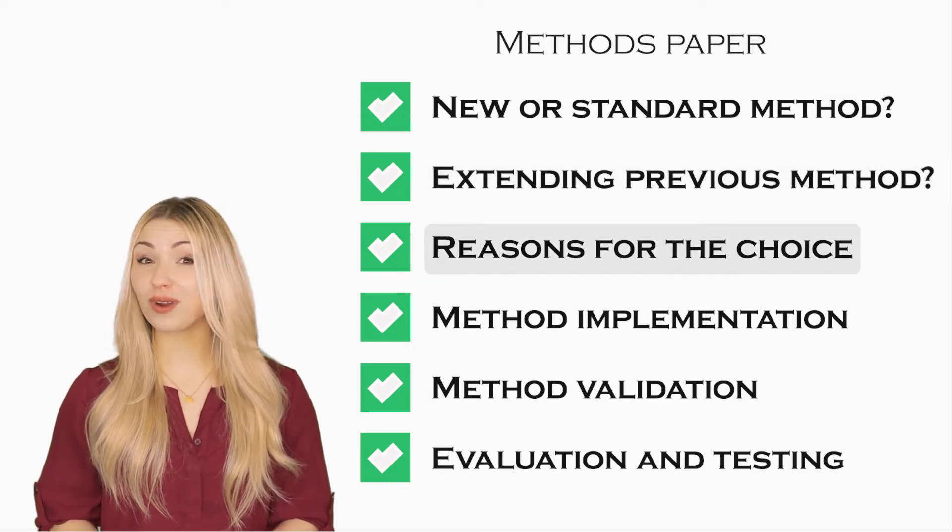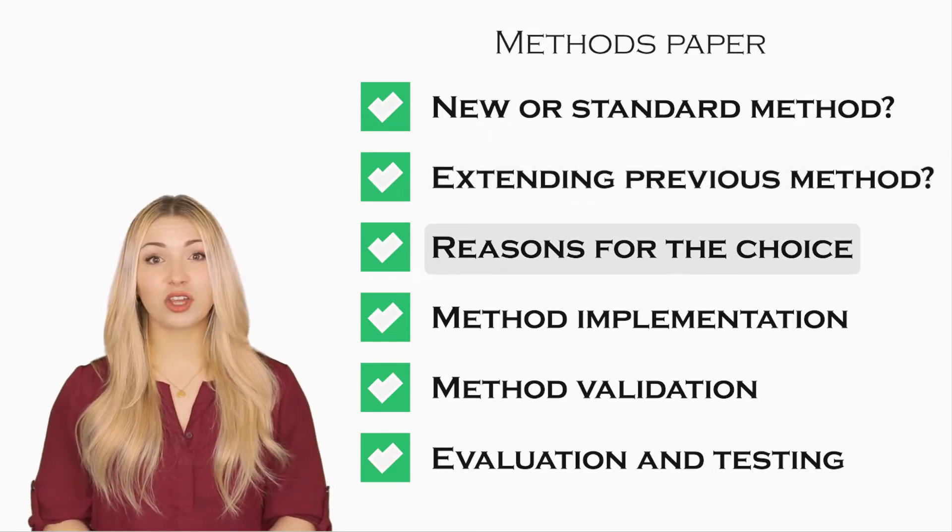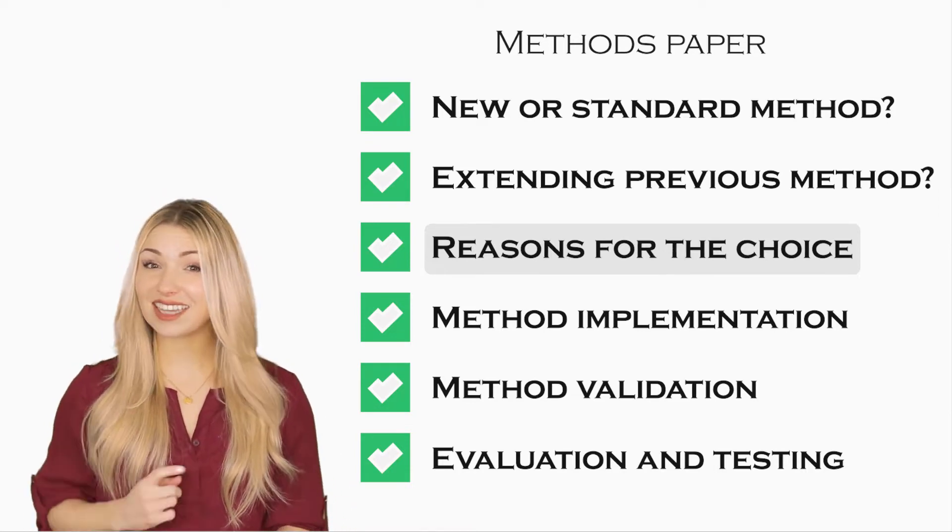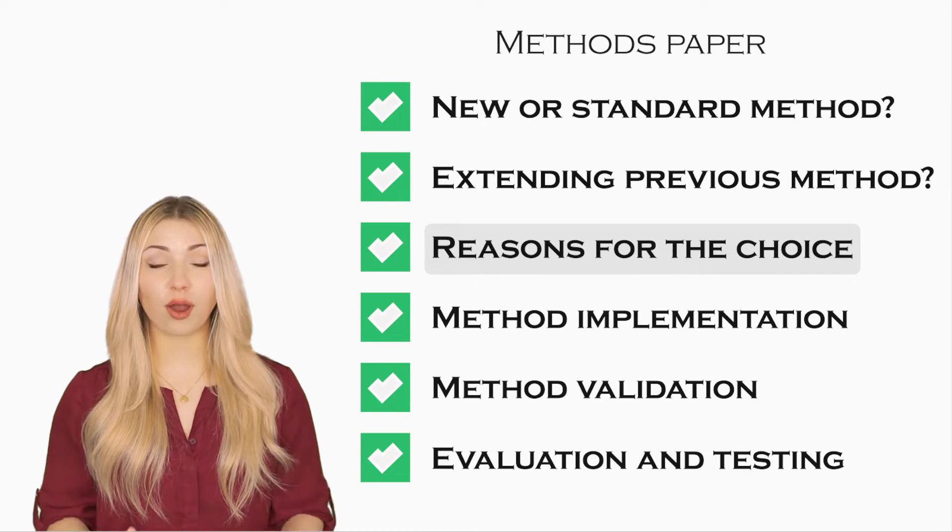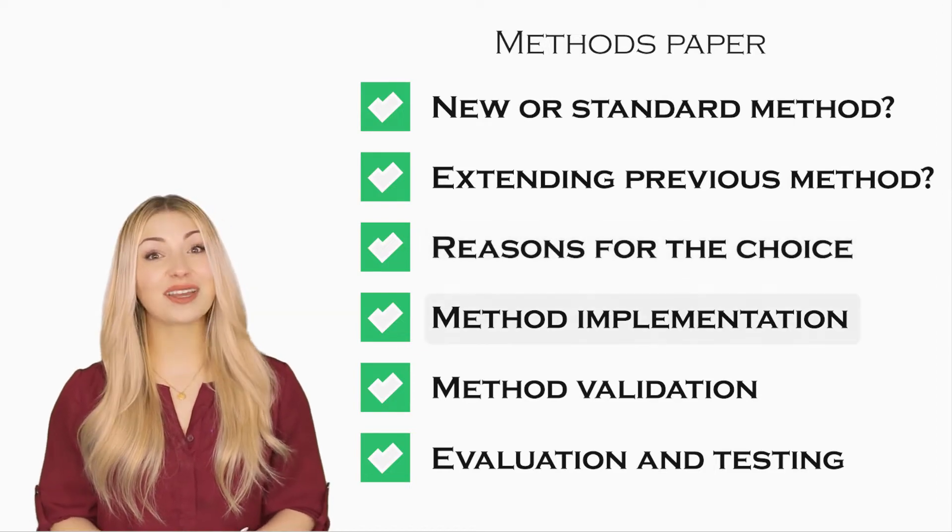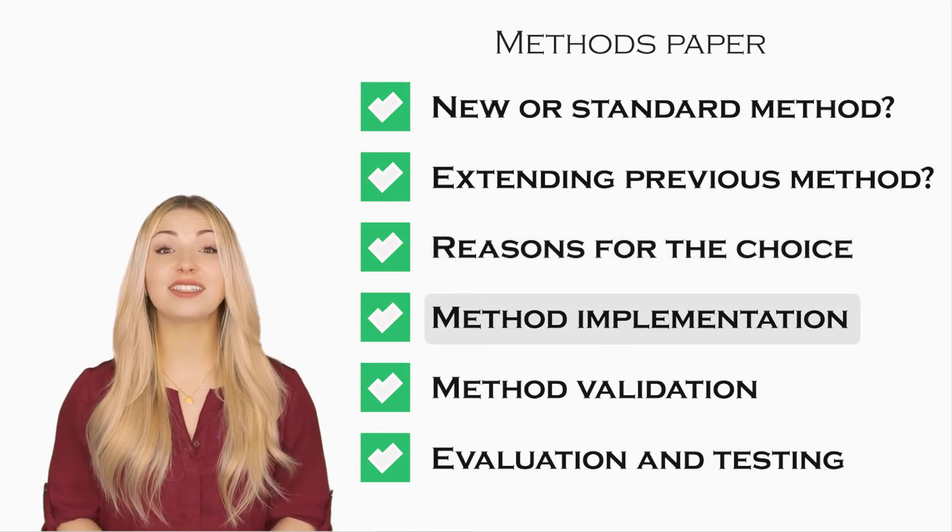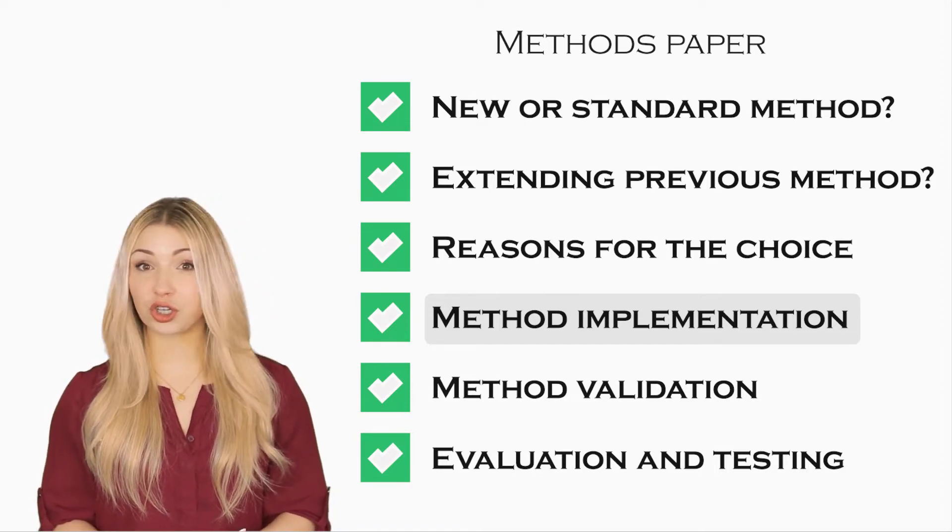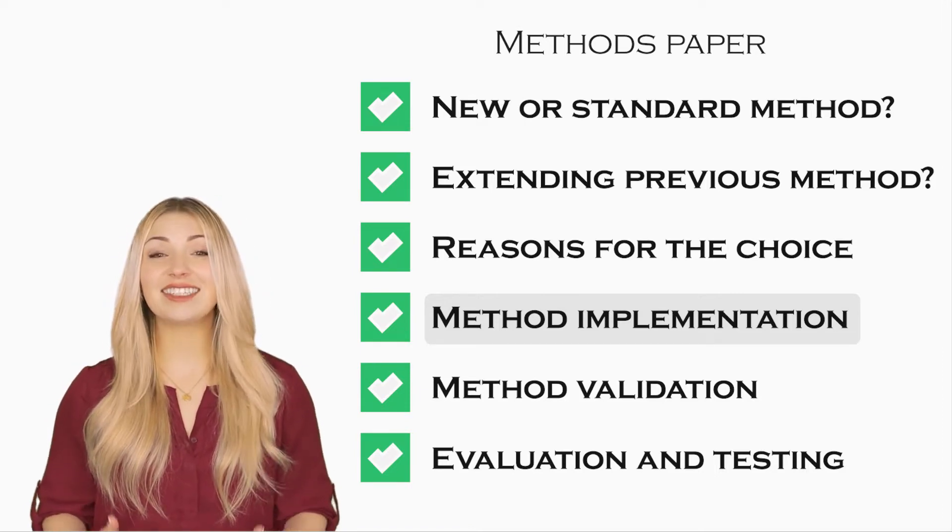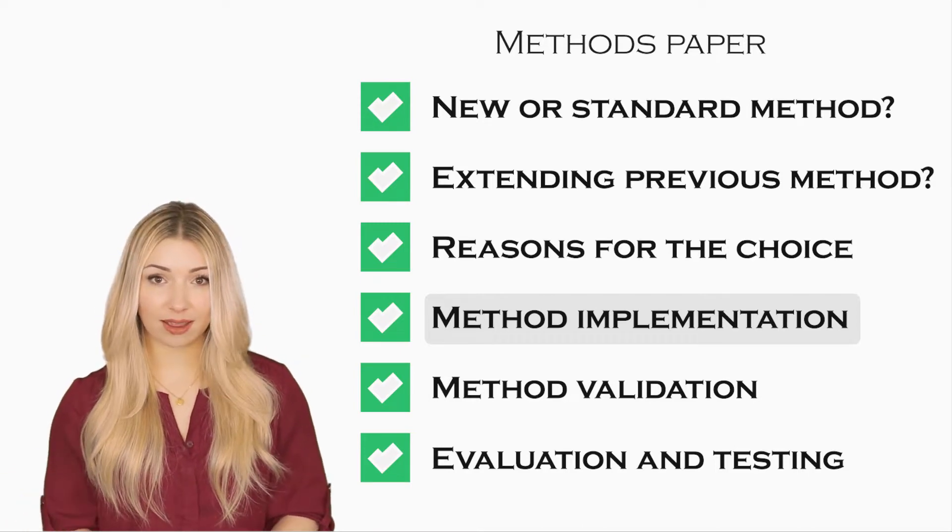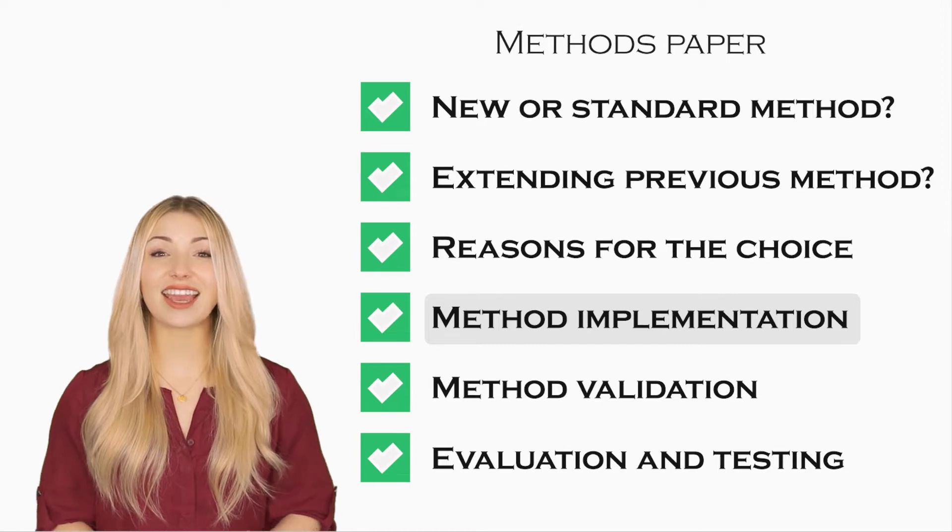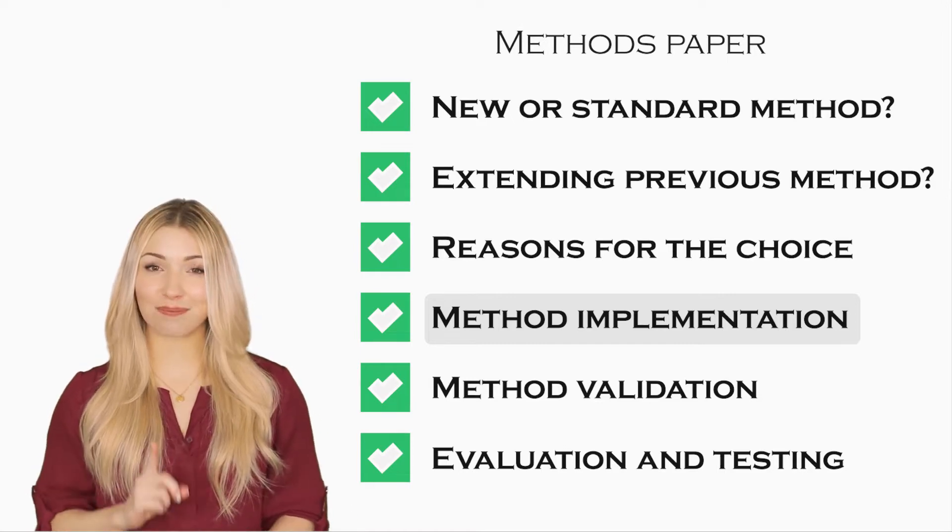Then you can talk about the reasons for choosing this method. You can quote previous papers that have used this method successfully to support your arguments. Then you can talk about the actual implementation details of the methods. The amount of information you provide will depend on the type of method you are proposing. If you are proposing a new method, then you have to detail the entire procedure step by step.